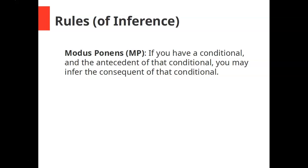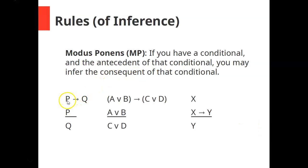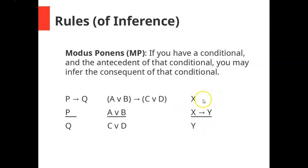Here are three examples of modus ponens. In example one, you have P then Q, and you have P, so you're allowed to infer Q. In example two, you have if A or B then C or D, and you have A or B, so you can infer C or D. In example three, you have X and then if X then Y, so you're allowed to infer Y. The point here is that the conditional doesn't have to come first — if you have the antecedent and then the conditional, you can still infer the consequent.